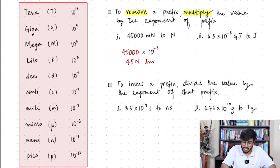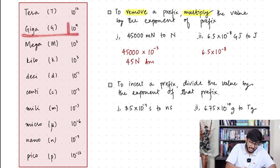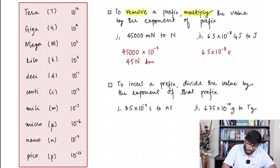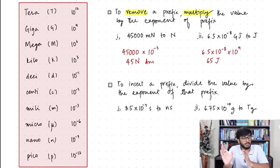Here's another example: 6.5×10⁻⁸ gigajoules, and I want to convert it back to joules — removing giga. Giga has an exponent of 10⁹, so I multiply by 10⁹. The calculation 6.5×10⁻⁸ multiplied by 10⁹ gives 65 joules. So to remove a prefix, multiply your value by the exponent of that prefix.